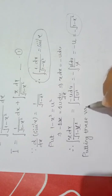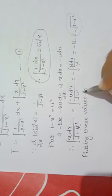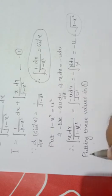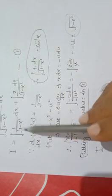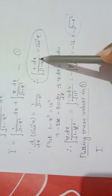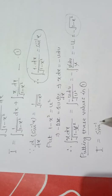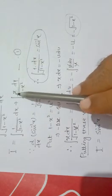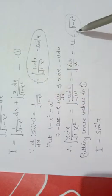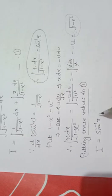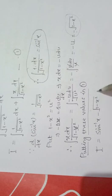Putting all these values in equation 1: I equals integral of 1 upon under root 1 minus x² which is sin inverse x, plus integral of x dx upon under root 1 minus x² which is minus under root 1 minus x², plus constant c. This is our result.